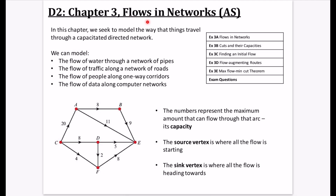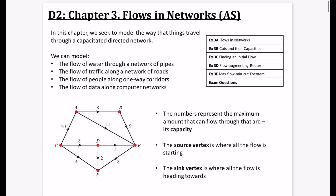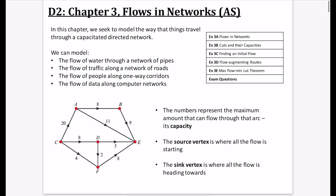We're going to be looking at flows in networks, just doing the AS section in chapter 3. If you are doing A2, I'd recommend going straight through chapter 3 and into chapter 4 because they flow very nicely into each other. In this chapter, we're going to try to model the way that things travel through something called a capacitated directed network.